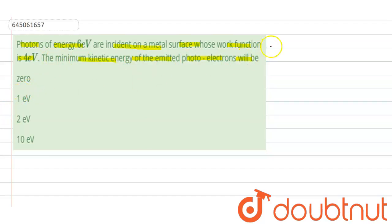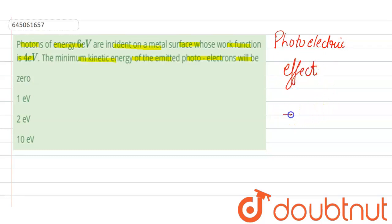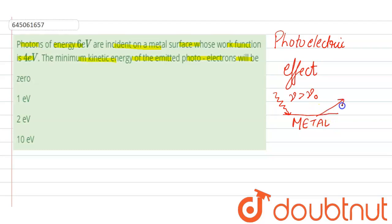First, let's understand what the photoelectric effect is. In the photoelectric effect, radiations of frequency greater than the threshold frequency are incident on a metal surface and electrons are emitted from the metal surface. This phenomenon is called the photoelectric effect.